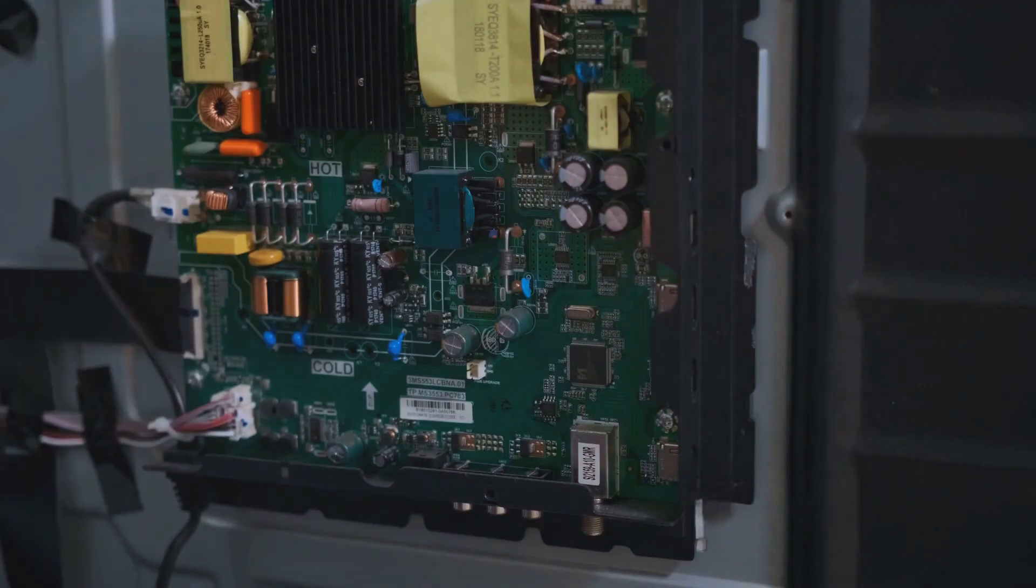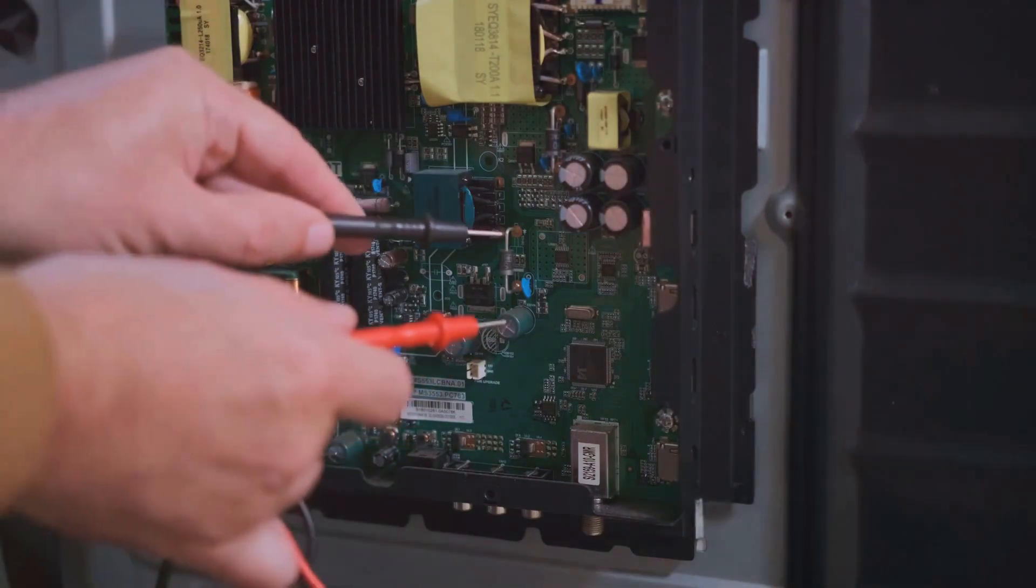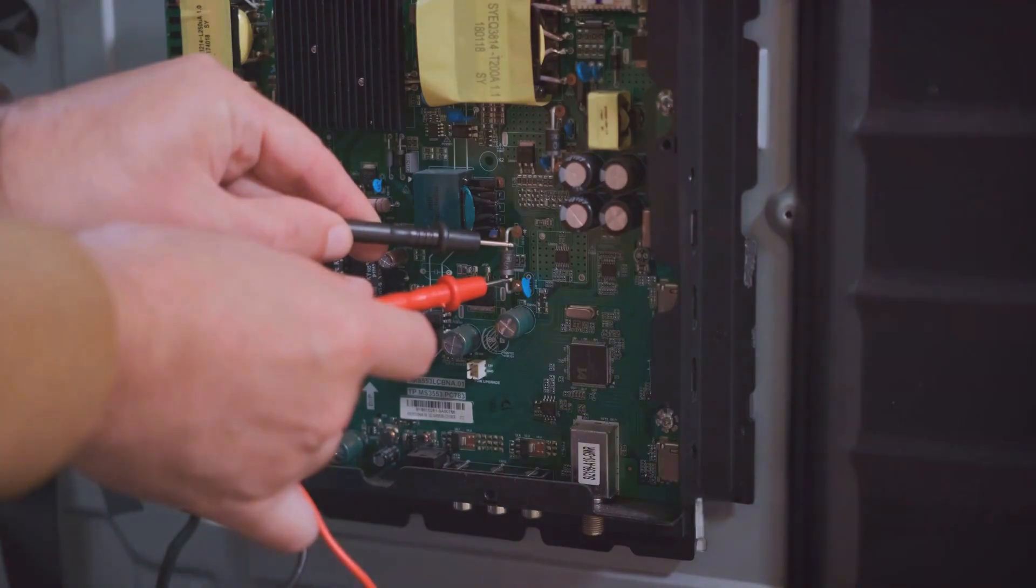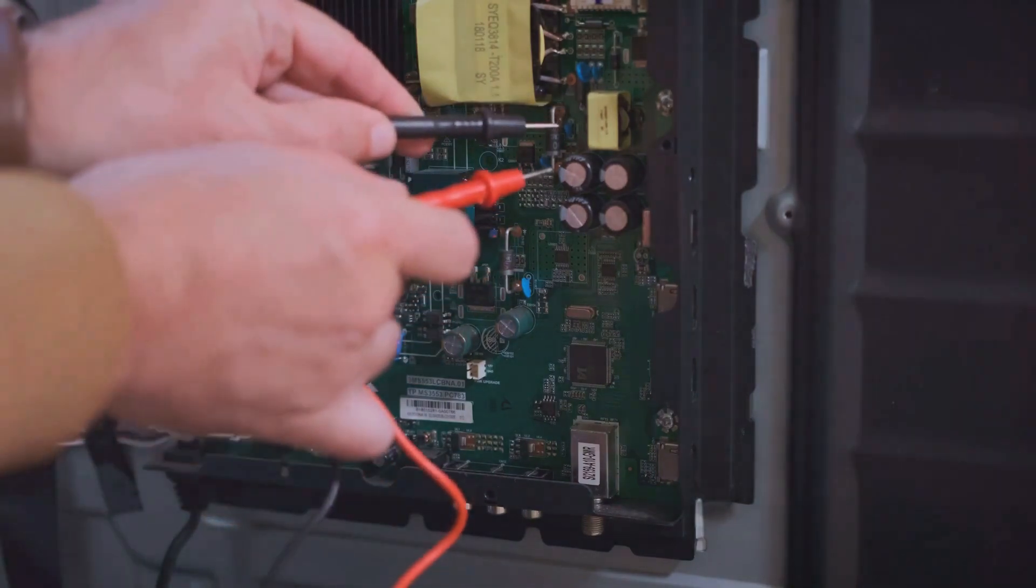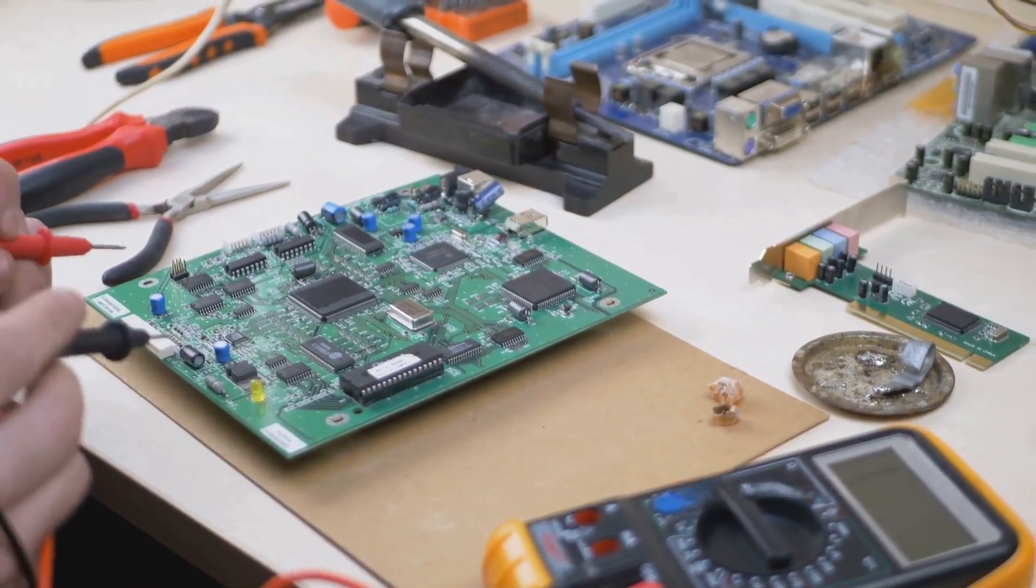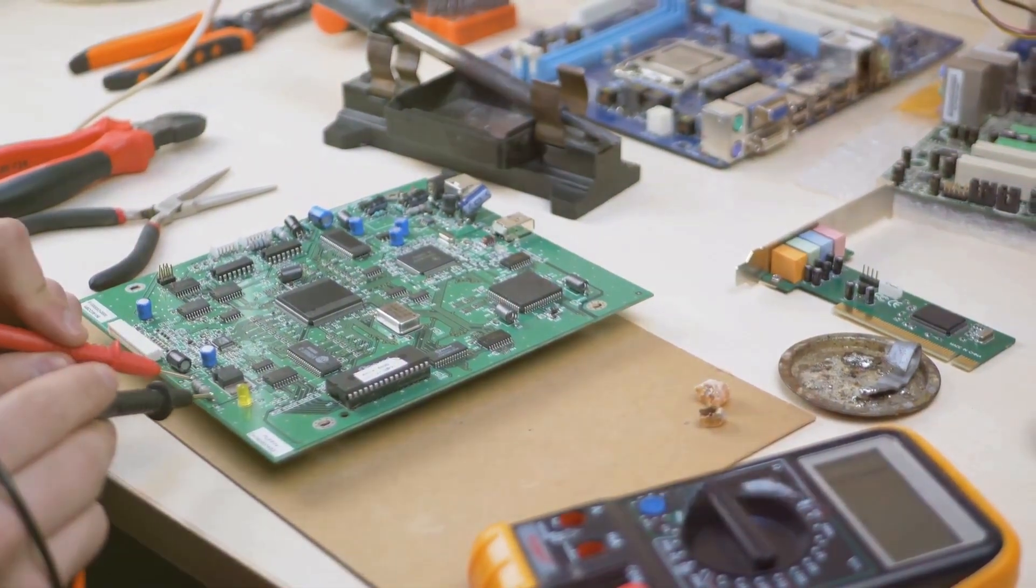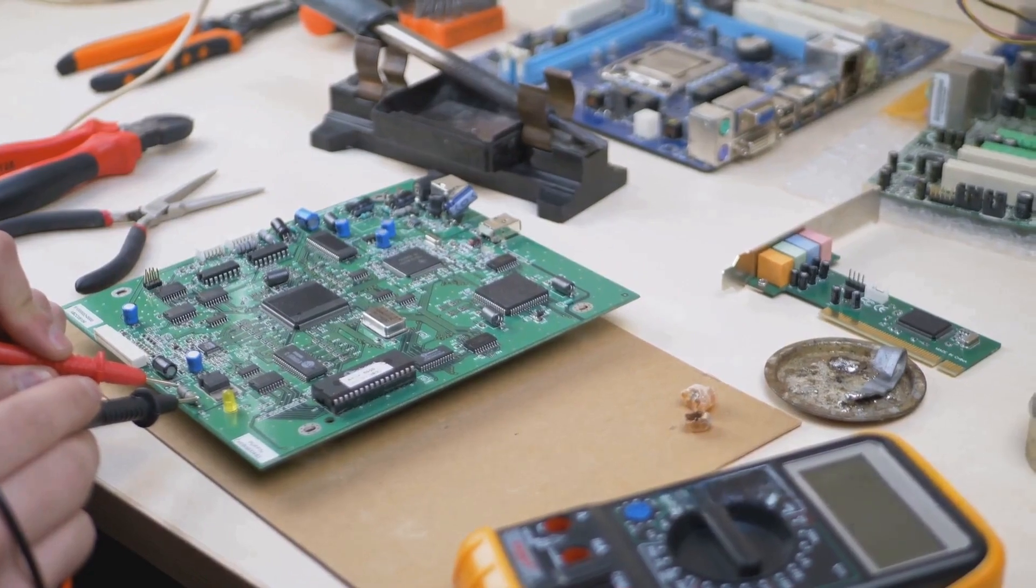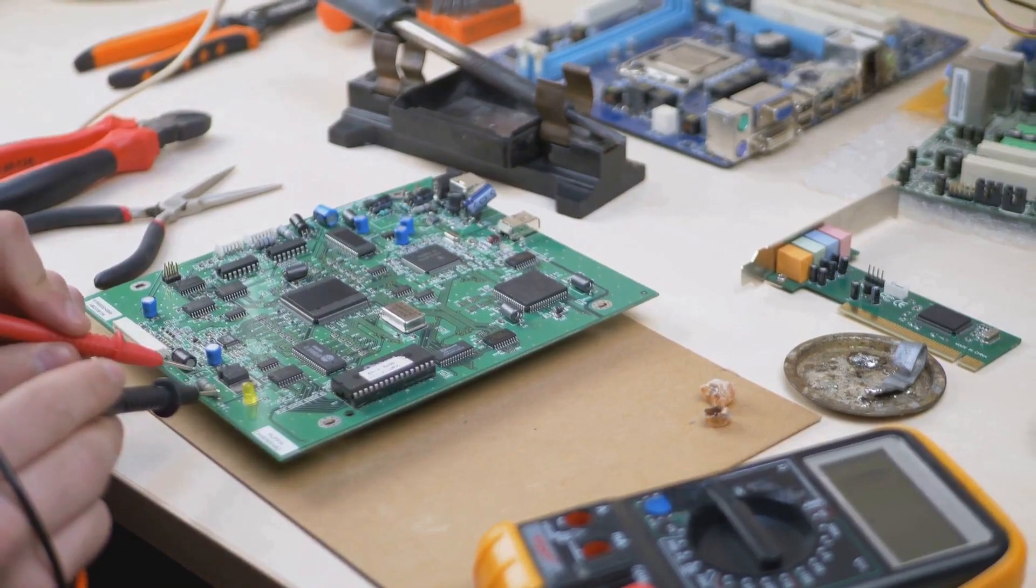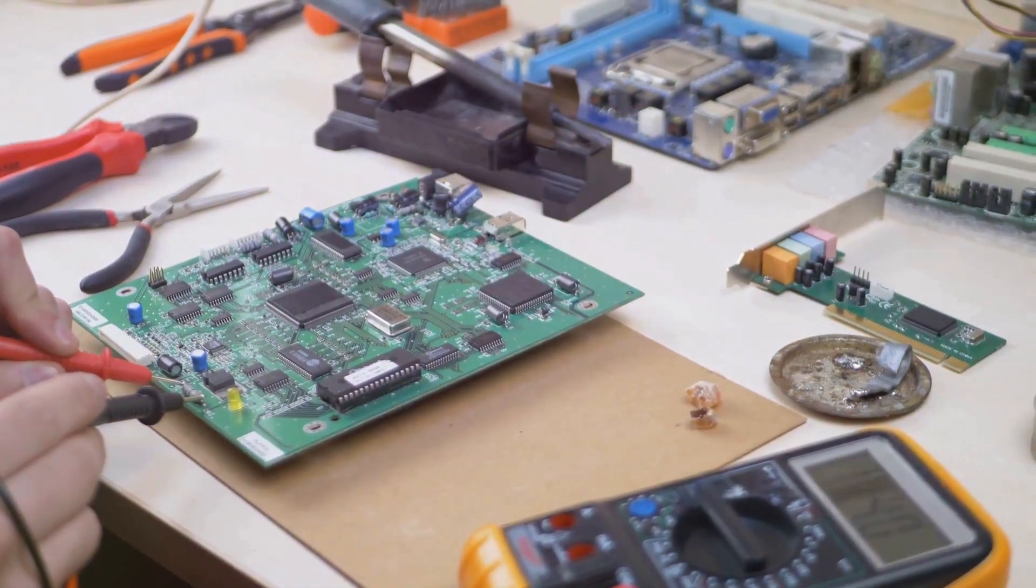Open the back cover and carefully inspect the circuit board for any obvious damage, like burnt components or broken solder joints. These can prevent the multimeter from functioning correctly. If you find any, you may need to replace the damaged parts or solder the broken joints. This can be tricky if you're not experienced with soldering. If you're not comfortable doing this, it's best to take it to a professional. They have the tools and expertise to fix these issues safely.